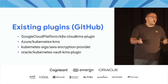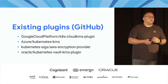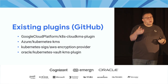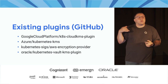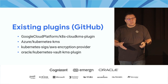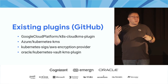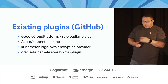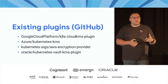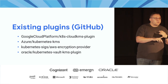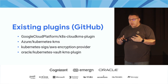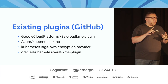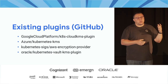You might be thinking this looks really hard — I don't want to write that plugin myself. The good news is that most major cloud providers already offer a plugin written by them or the community, and it's actually not that hard to write your own. I wrote my own just to test it — it took about six hours including writing tests. There are existing plugins on GitHub: on Google Cloud there's the Kubernetes Cloud KMS plugin, Azure has the Kubernetes Disk Encryption KMS plugin, the Kubernetes SIGs have created an AWS encryption provider plugin, and Oracle has created one for HashiCorp Vault.